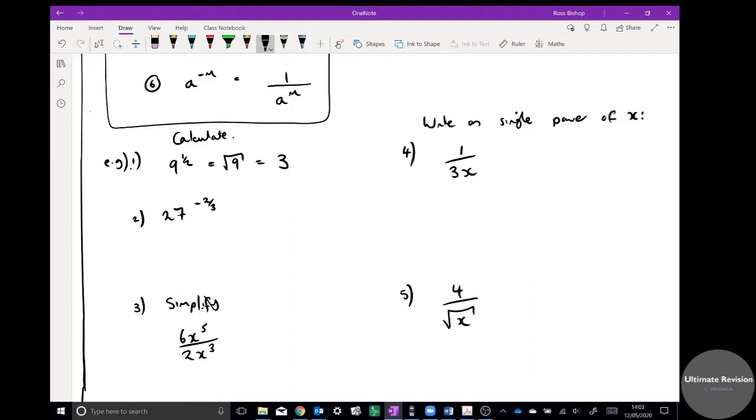Okay, 27 to the negative two thirds. The first thing you need to do is do one over 27 because it's negative, and then you make that two thirds. You make it one over to get rid of the negative. The best thing to do is do the cube root first, so the cube root of one over 27 - cube root the top which is one, cube root the bottom which is three, so one over three squared, which is going to be one over nine. That's your final answer.